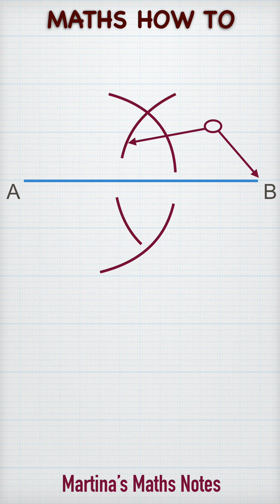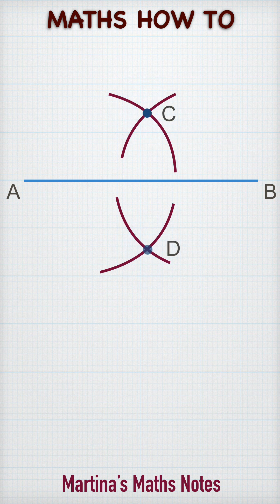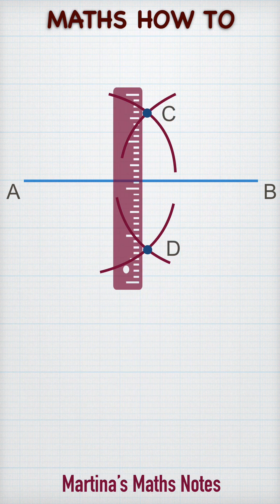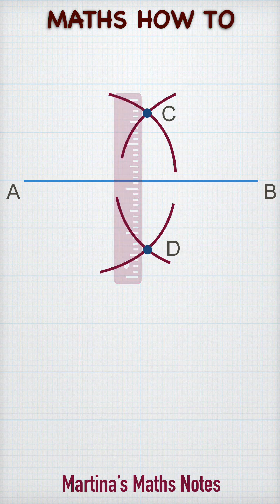Label the points of intersection of the arcs as C and D. Place a straight edge alongside the points C and D and draw a line joining the two points.